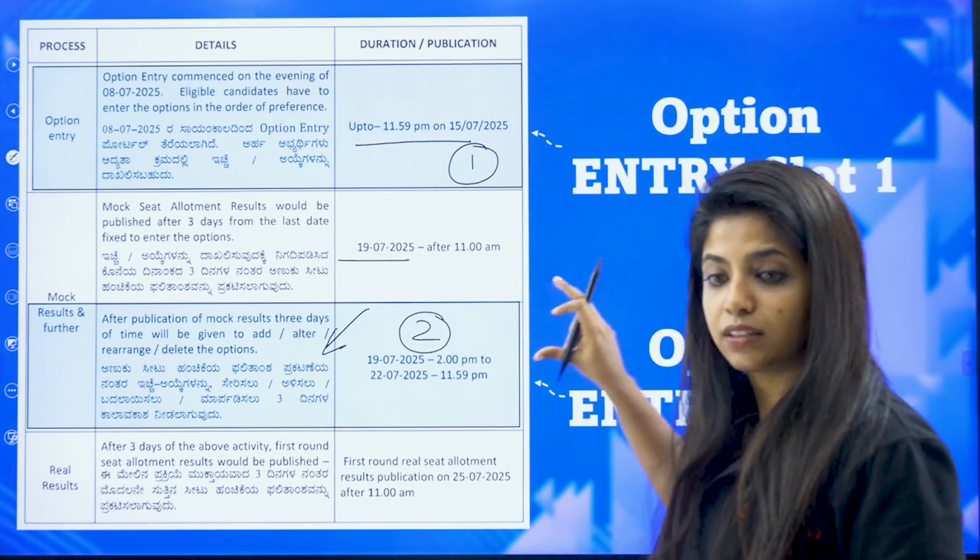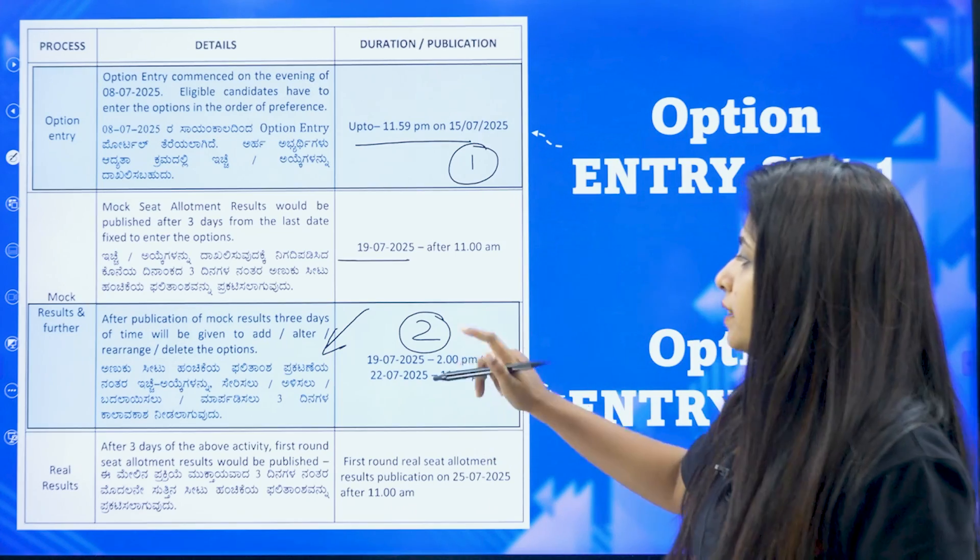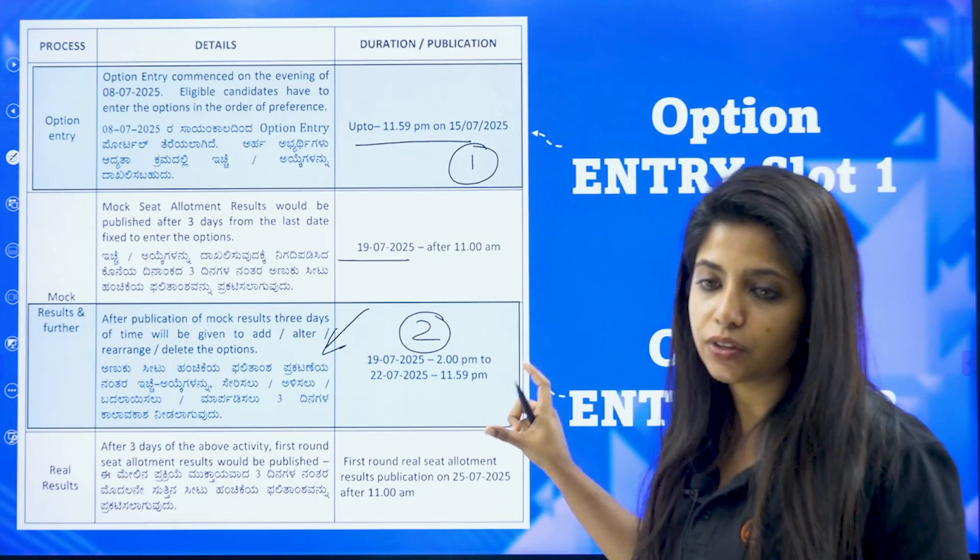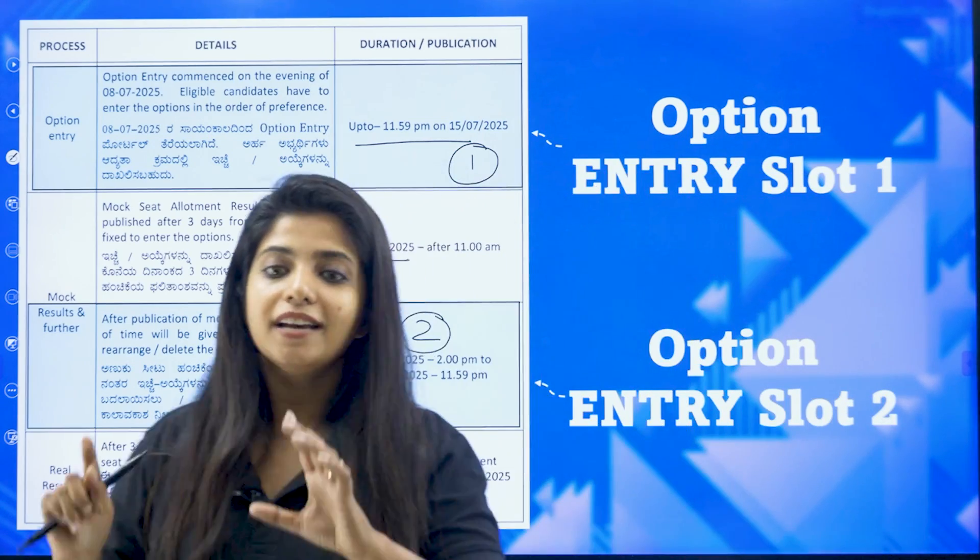So this round is there. This slot is very much important. That will be from 19th to 22nd. After that, my dear children, what will happen? You will get your result and that will be round one result.